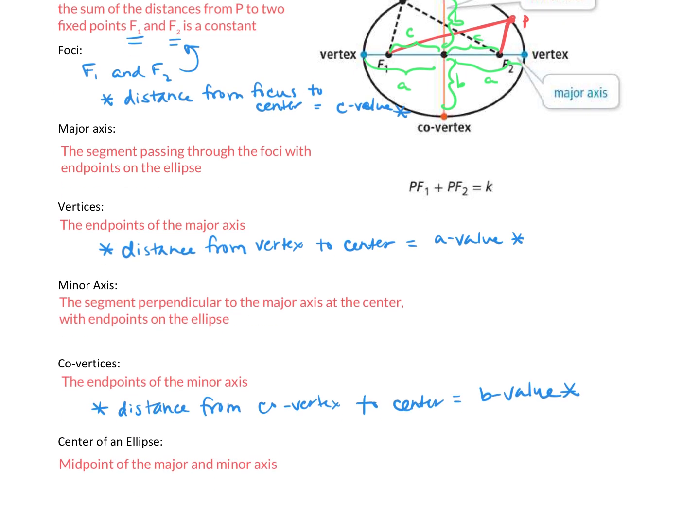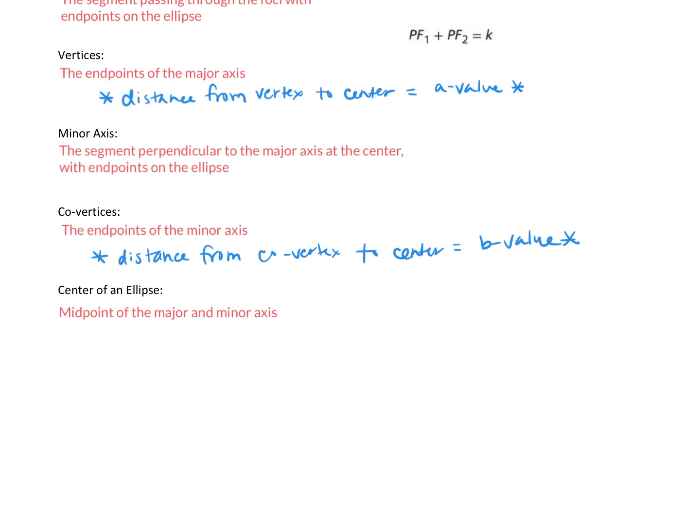Alright, so one last note we want to write in. How do the A, B, and C values relate in an ellipse? So this is going to be another starred thing you're going to need to know. A squared is going to be equal to B squared plus C squared. Alright, let's take a look at some examples.